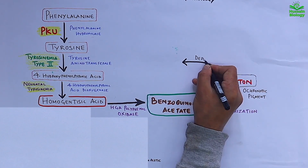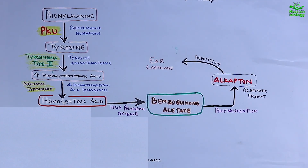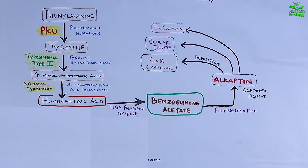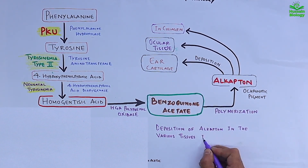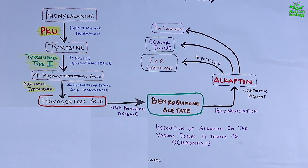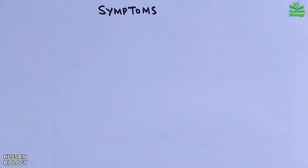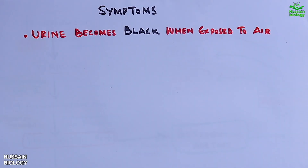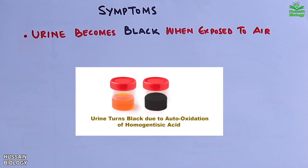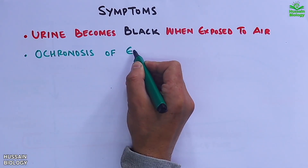Alkapton is deposited in ear cartilage, ocular tissues, and collagen. The deposition of alkapton in various tissues is termed ochronosis. Moving on to symptoms: first, urine becomes black when exposed to air, as shown in the diagram. We also see ochronosis of certain tissues, such as black spots in the sclera of the eye, shown in the diagram.